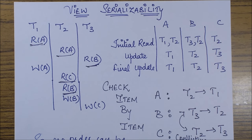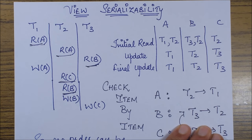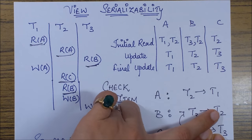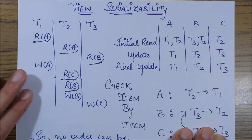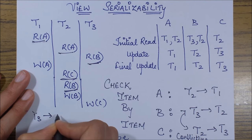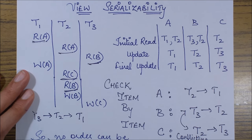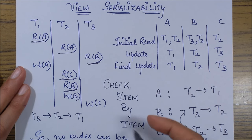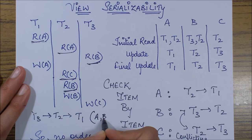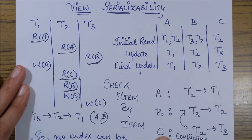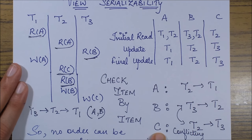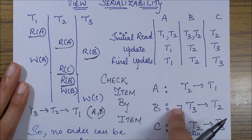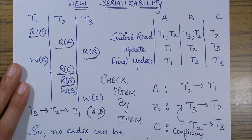Now combining all three orders: from A and B, we get T3 before T2 and T2 before T1, giving the combined order T3 → T2 → T1. However, from column C, we get T2 before T3, which directly conflicts with the order derived from B. These two orders are contradictory, meaning there is no valid serial order possible.